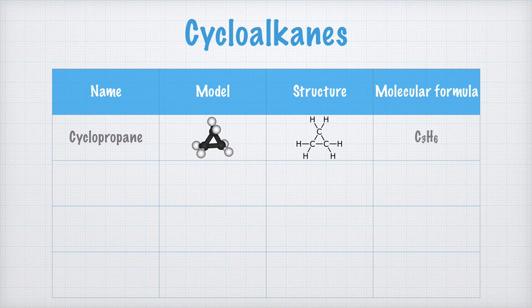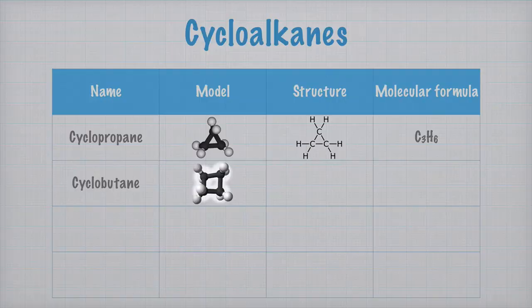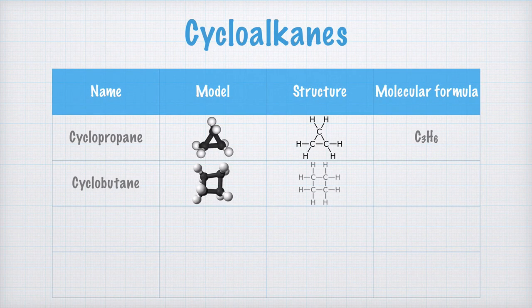The next cycloalkane is cyclobutane. Since it consists of four carbon atoms, it is a kind of butane molecule, and since the molecule is circular, it is called cyclobutane. This is its structural formula, and its molecular formula is C4H8.